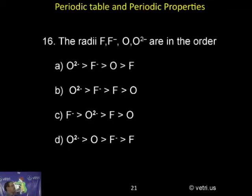The radii F, F minus, O, O2 minus are in the order. You should be careful, you have to analyze this. What is the correct order?